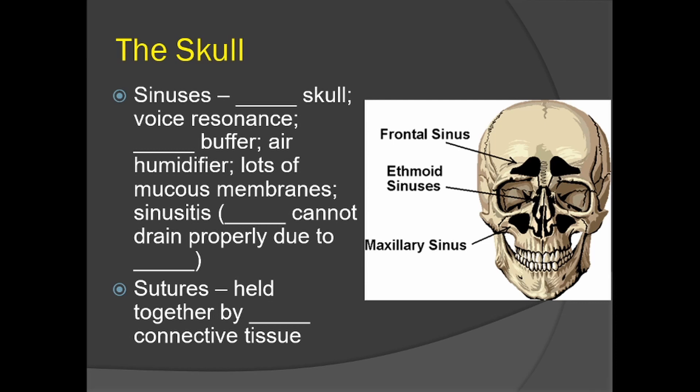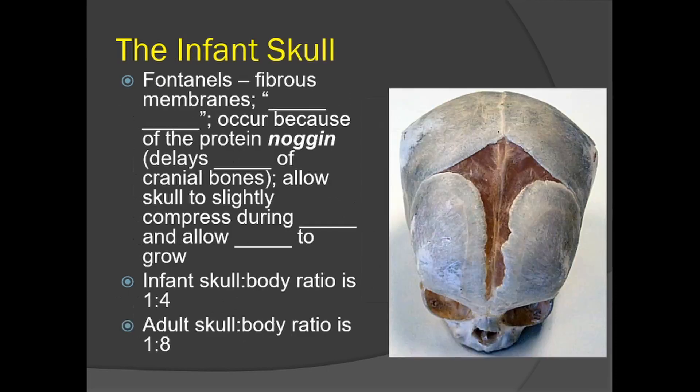Sutures are held together by fibrous connective tissue, holding the eight bones of the cranium together in a tight zipper-like immovable joint. You don't want these bones slipping and sliding around. The sutures look like zippers — the bones have been zipped up in numerous places on the skull — and fibrous connective tissue is very tough and holds them together very well.